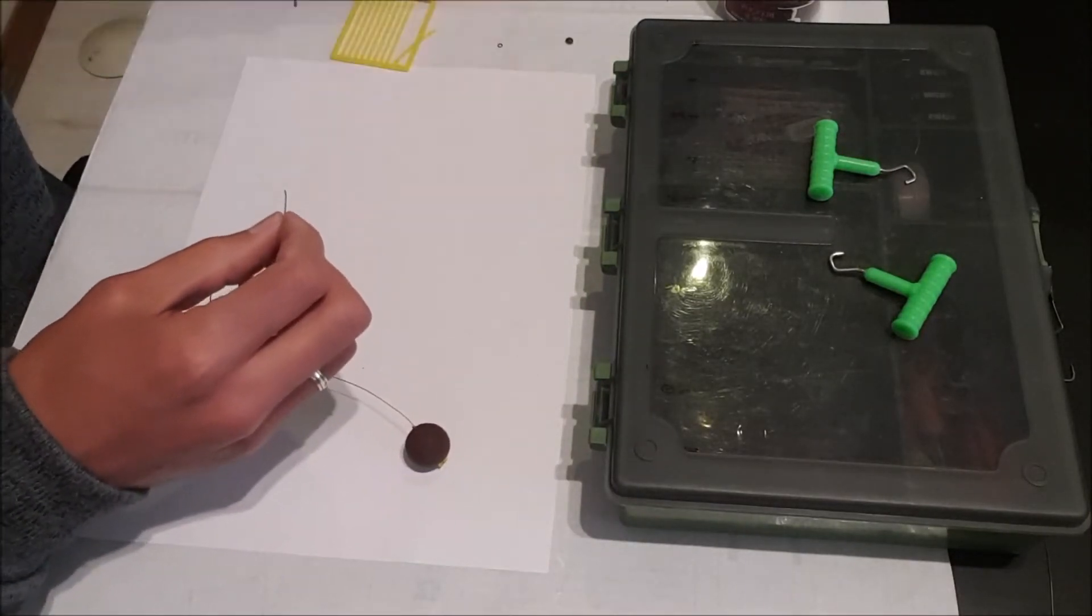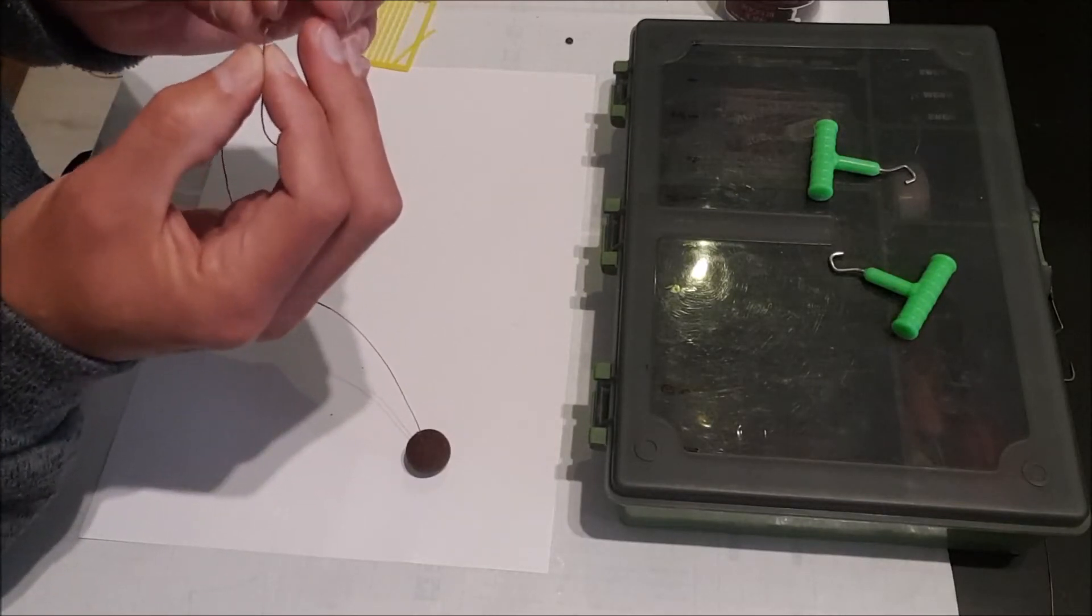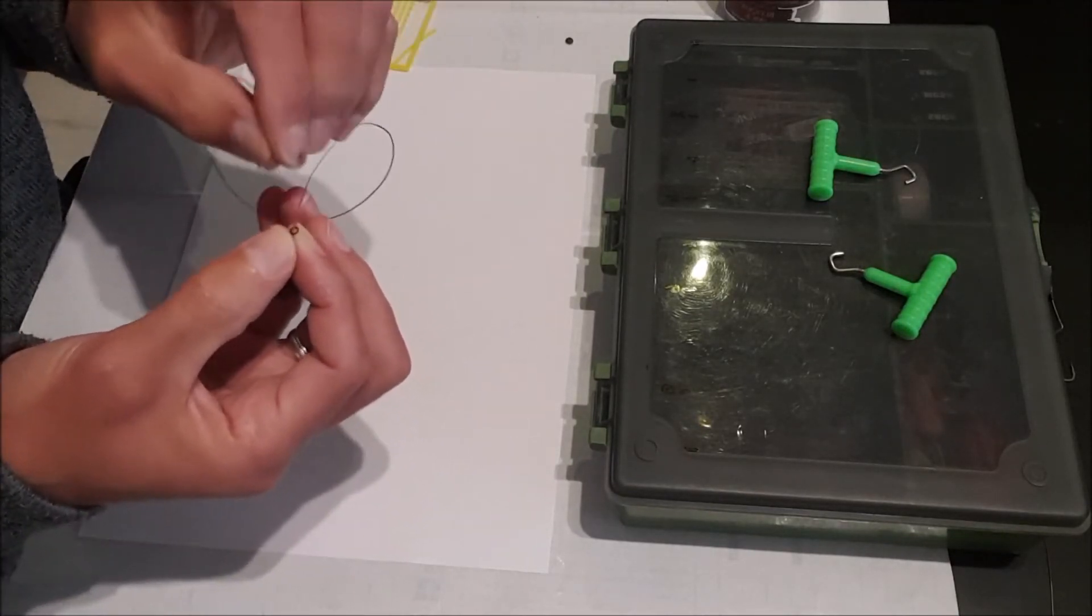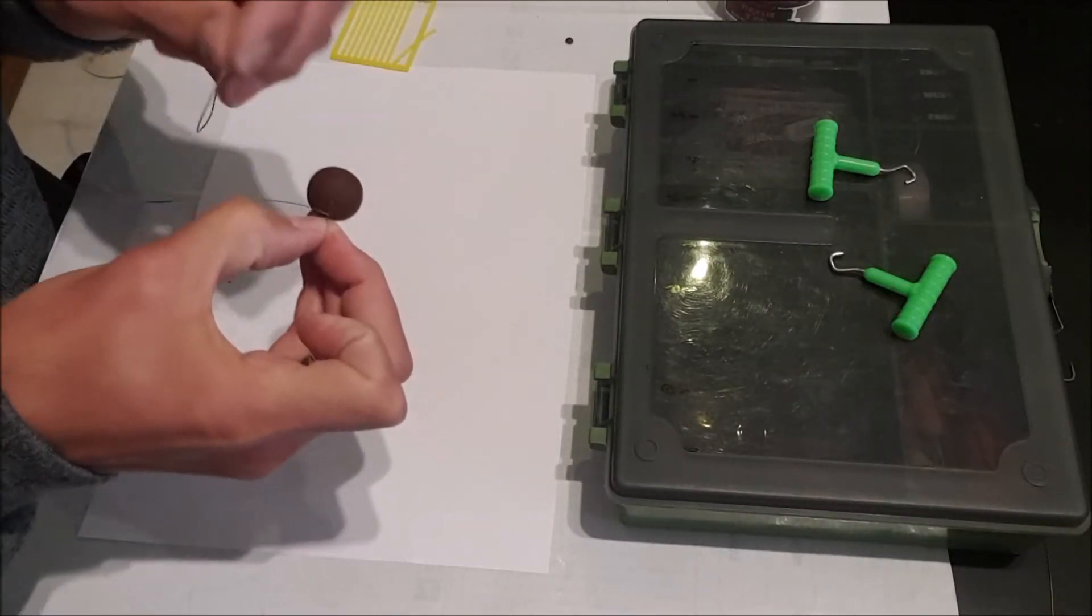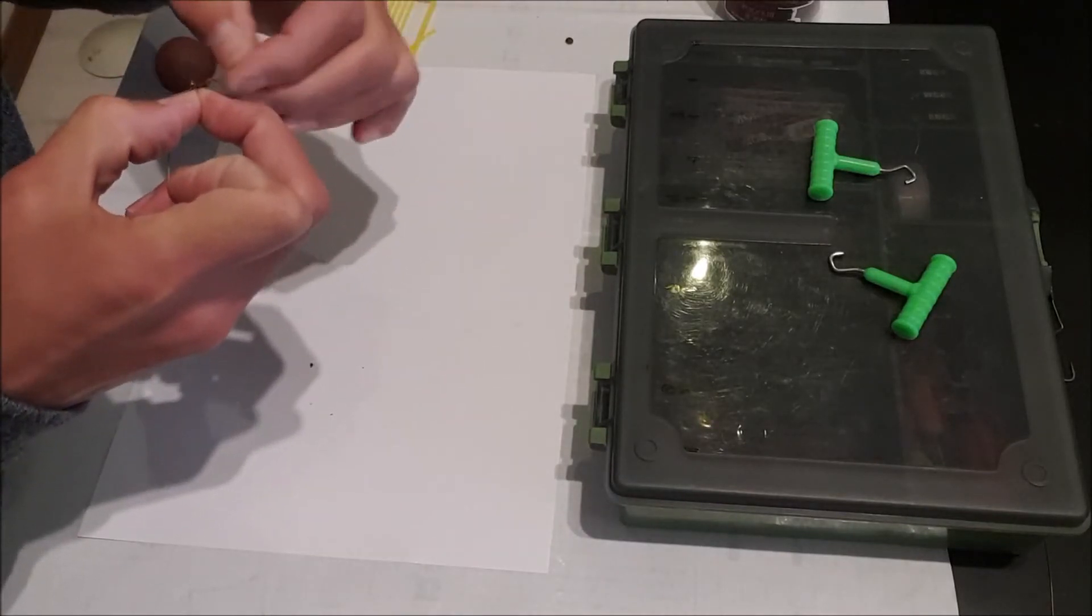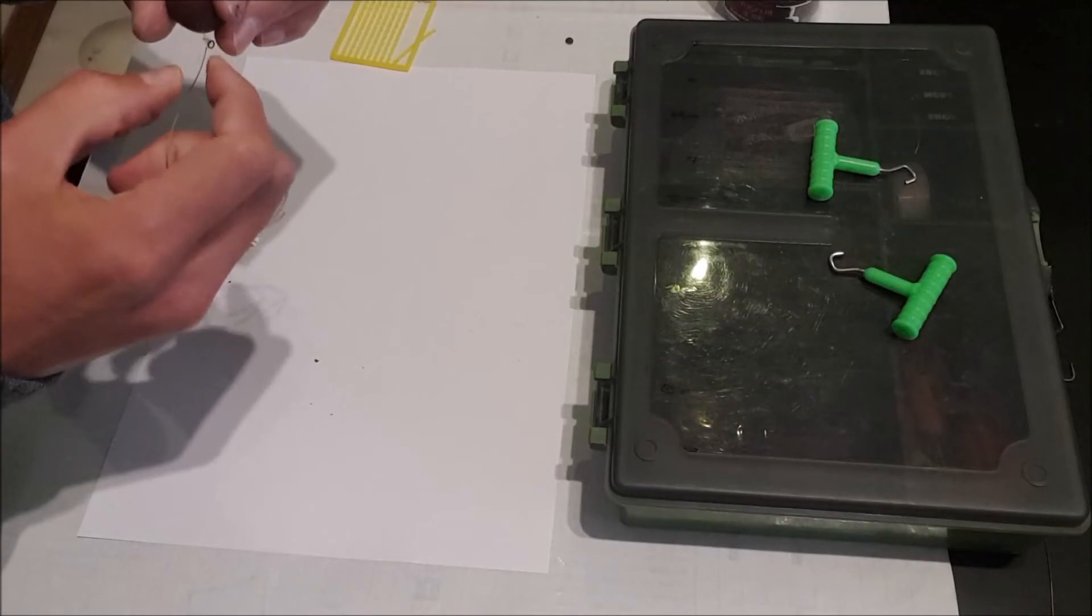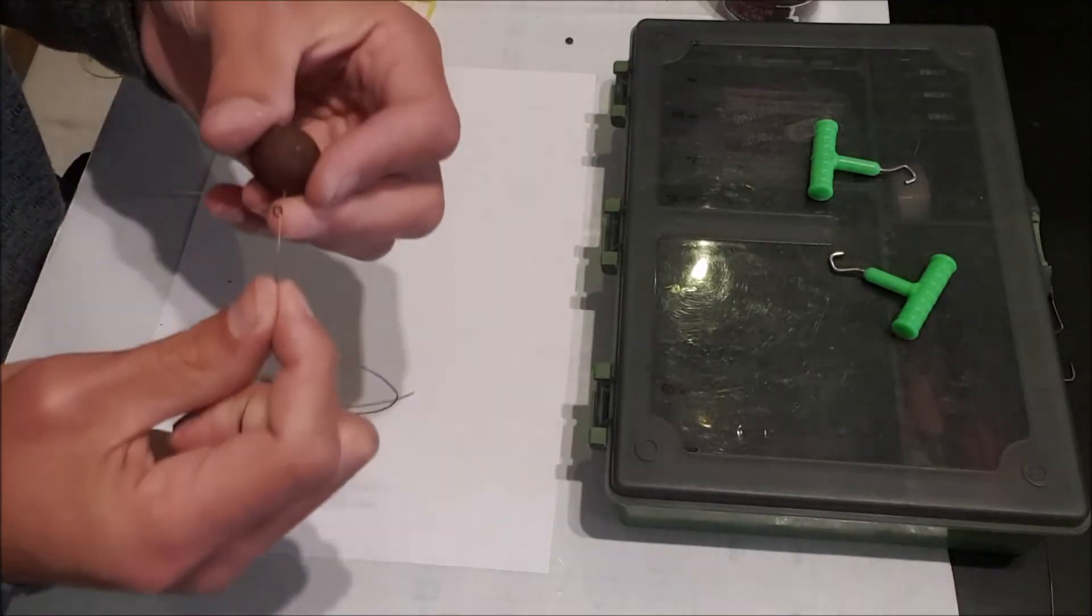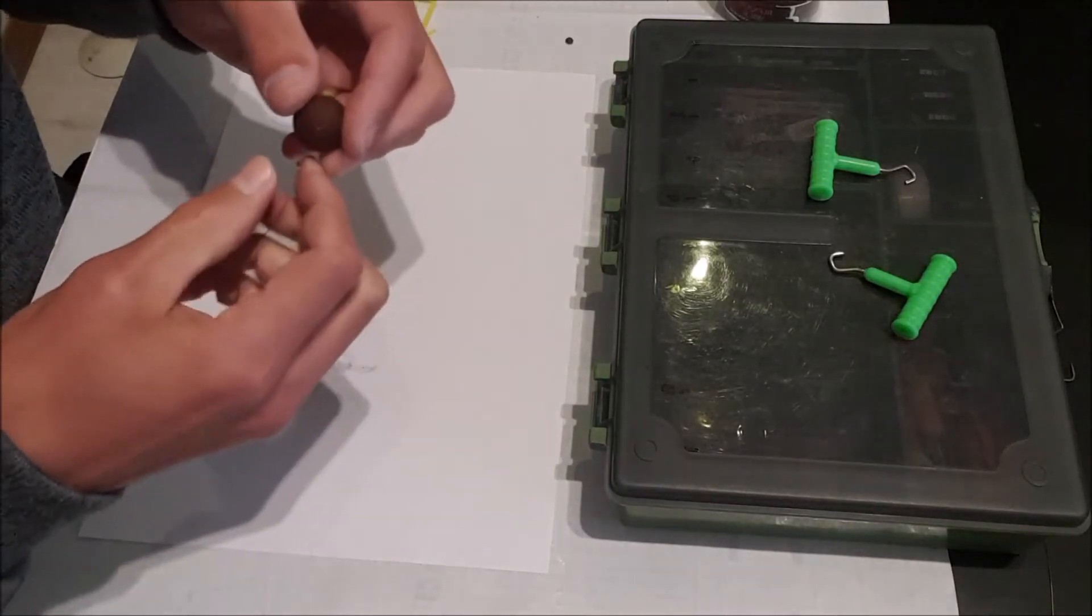Now this time you can use a mini ring, thread it onto your hook link material. This is going to do the same job as the piece of tubing. And just do an overhand knot to keep it in place. And again, just have about 5 millimeters from the boilie. And this all comes down to preference.